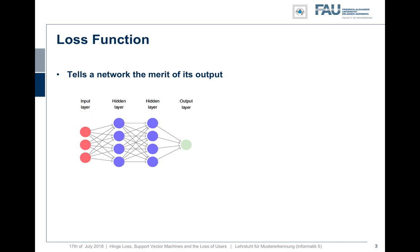Generally, we need loss functions in order to enable training of neural networks. The loss function essentially tells us how good our current parameter set is for the given purpose of the network. So let's say we have a parameter set w that describes the weights in our hidden layers and all the connections of our network. The loss function tells us, given inputs x and desired outputs y, how well the produced output fits the optimal output y.